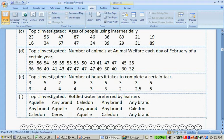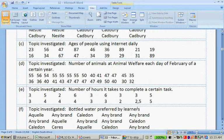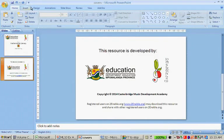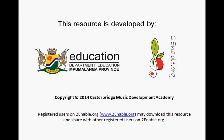And then, lastly, question F. Topic investigated is bottle of water preferred by learners. It's all the different words. So no numbers. Because it's words and not numbers, it is categorical data. And that is the first exercise. Thank you very much.